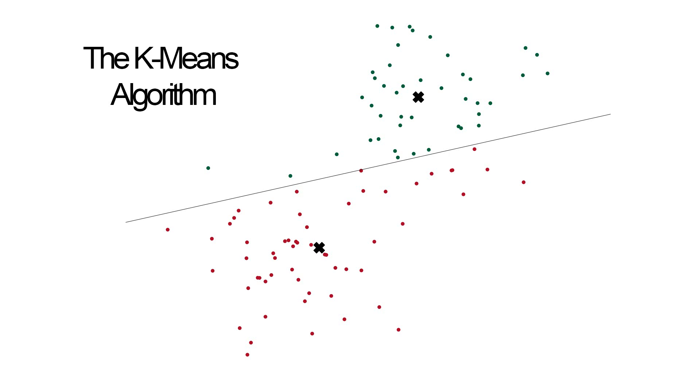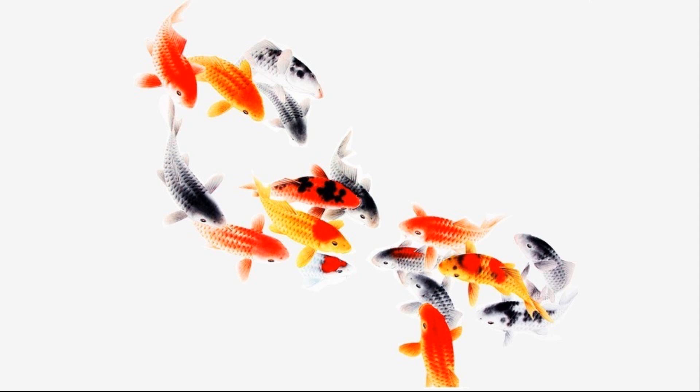Let's suppose you are a fisher sitting at the sea and you catch a hundred fish in a single day. But you don't have a clue which kind of fish they are. The only thing you know is that there are two different kinds of fish in the sea, let's say tuna and salmon, but you don't know how to classify them. So you need a pattern in the features of the fish so that you can make an established guess on how to separate those two kinds.